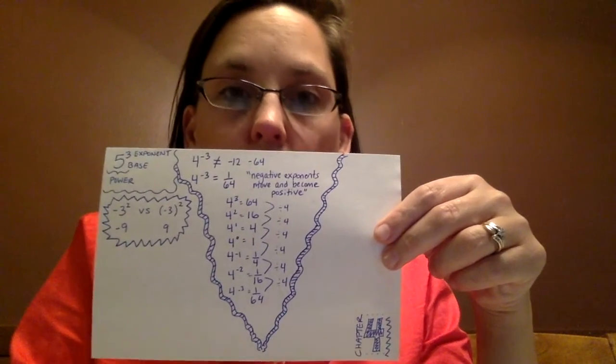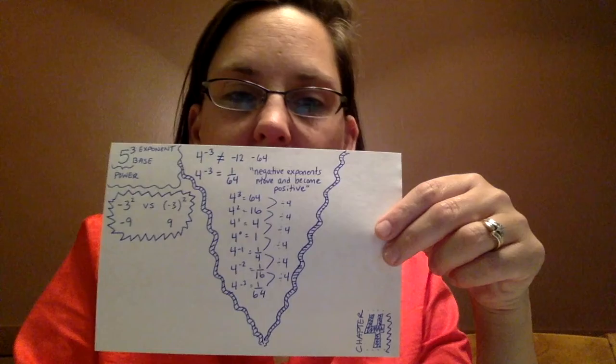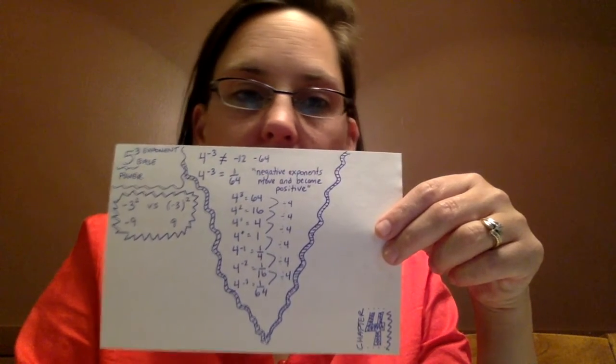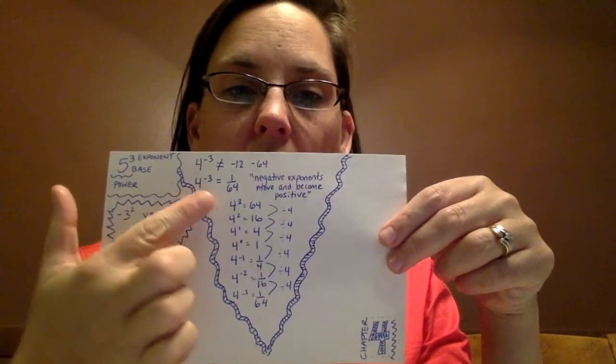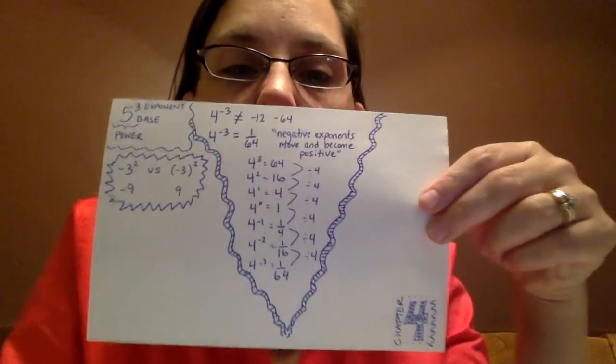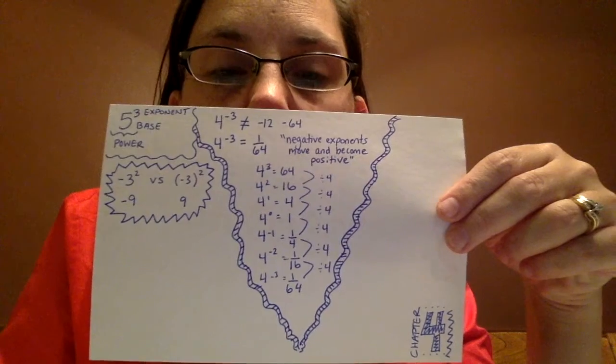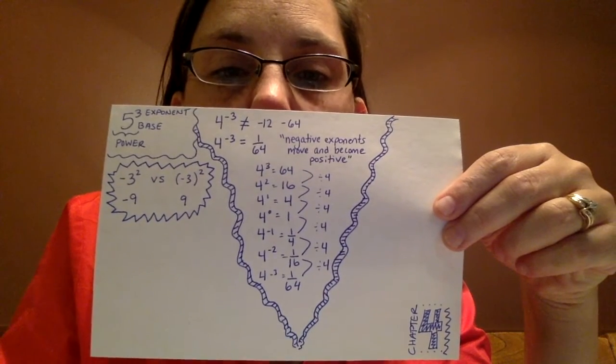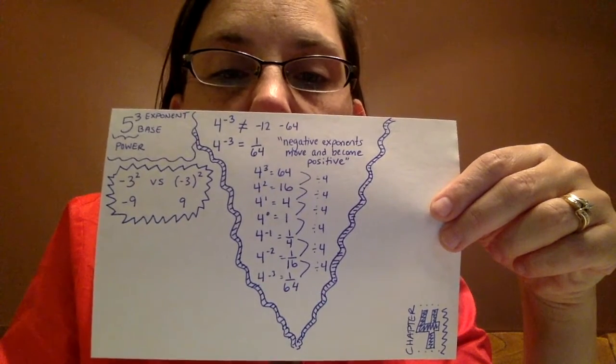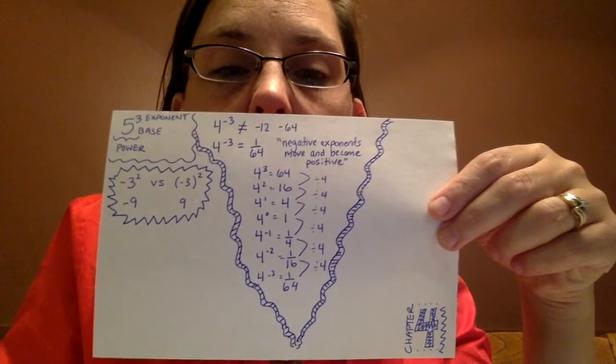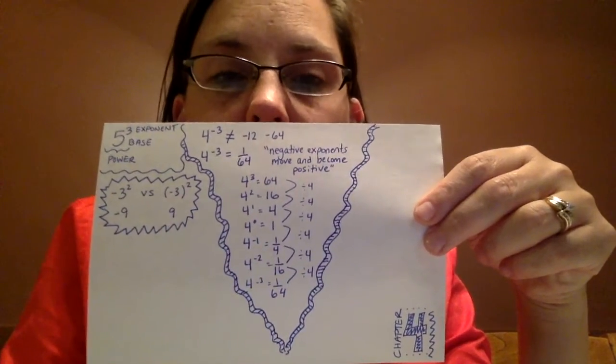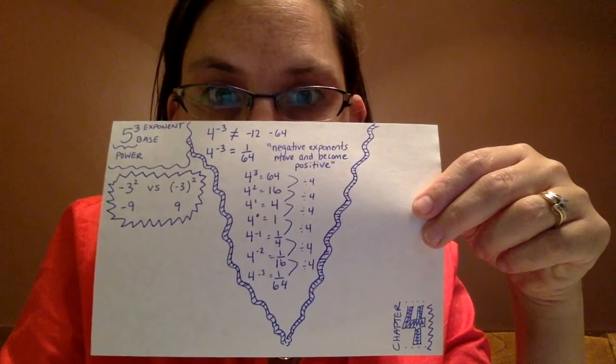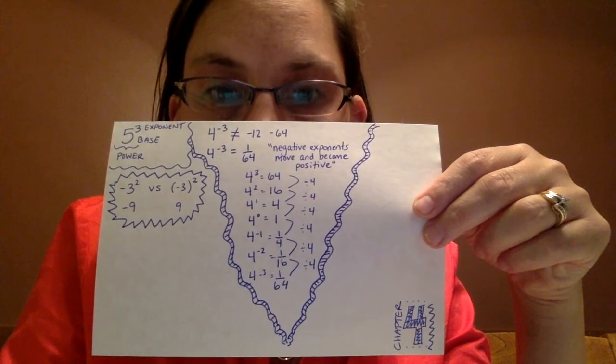But that's just a rule, or just sounds like you're trying to memorize something and that it really has no proof behind it. But actually, if you look at my pattern right here down the center, 4 to the third power is 64, 4 to the second power is 16, 4 to the first power is 4. And when we get right here to 4 to the zero power, lots of students say 4 to the zero power is 0. And that is not the case.